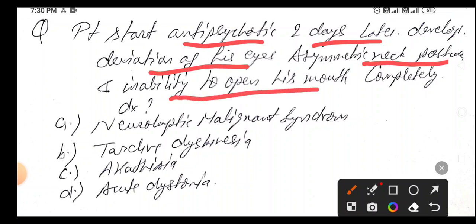What is the diagnosis? Neuroleptic malignant syndrome, tardive dyskinesia, akathisia, or acute dystonia. In neuroleptic malignant syndrome, it starts developing from week to month with extreme rigidity, fever, and unstable blood pressure. But in this scenario, the patient started antipsychotic and after two days developed such symptoms, so this is not a case of neuroleptic malignant syndrome.